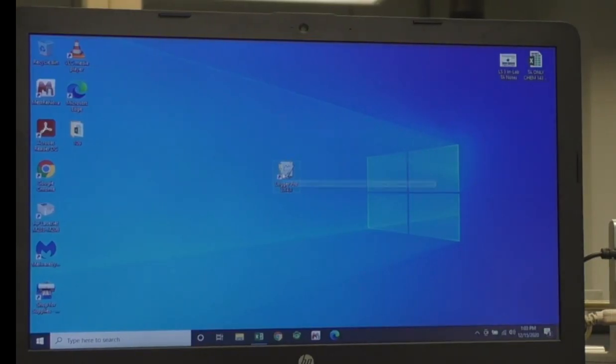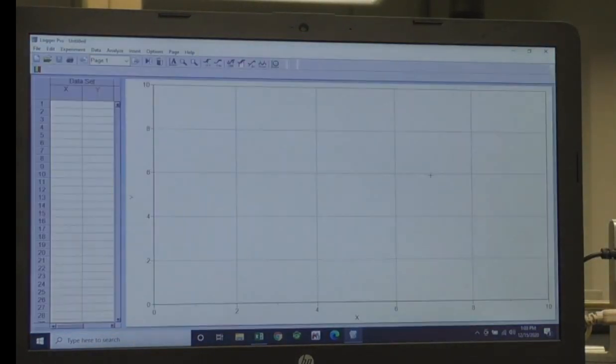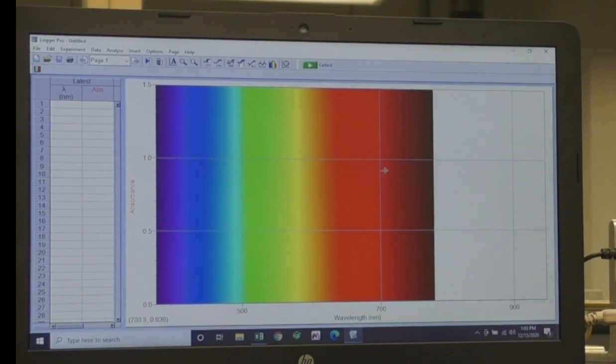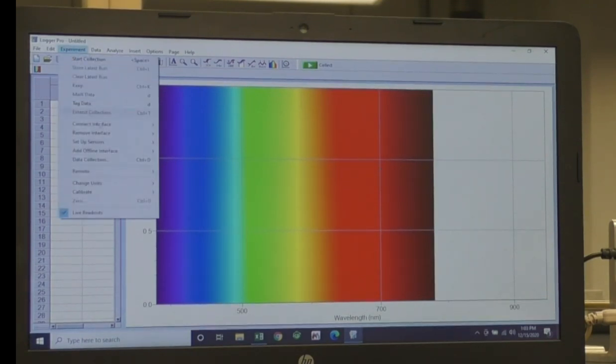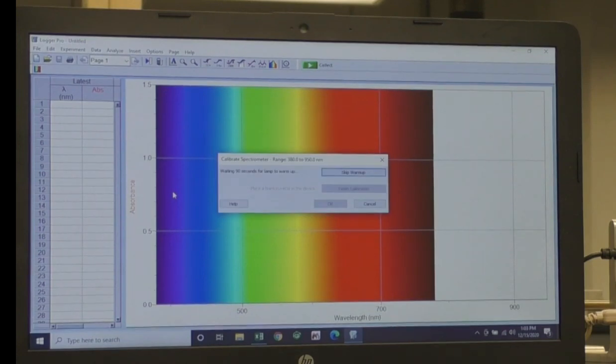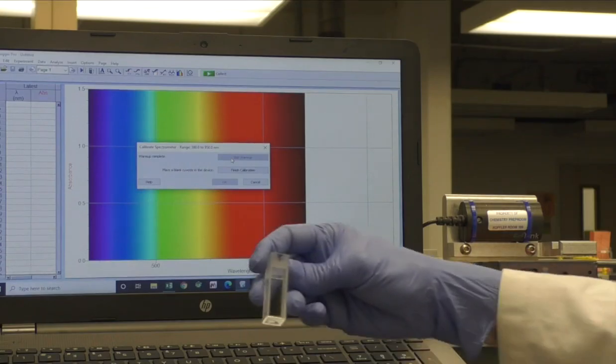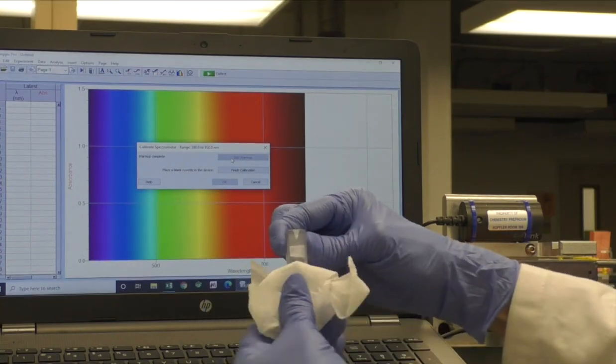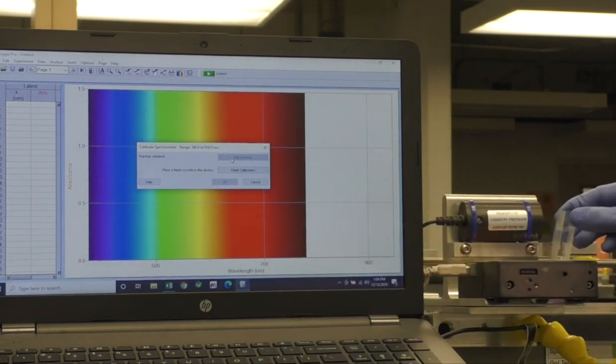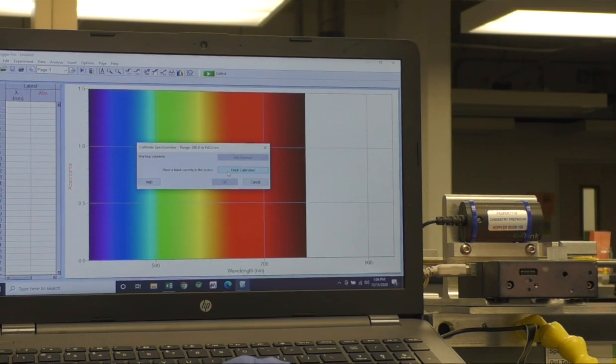Plug the spectrometer into your computer and open LoggerPro. A rainbow background will appear. Choose Experiment > Calibrate > Spectrometer 1. In the dialog box, you can click Skip Warm-up if the spectrometer has been on for 90 seconds. Using the cuvette with your solvent, wipe it with a Kimwipe and place it in the spectrometer. Click Finish Calibration, wait until it is done, and then choose OK.